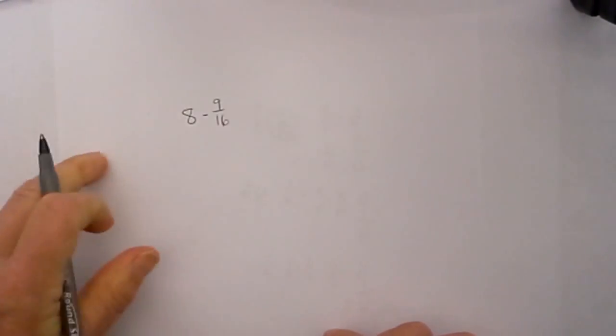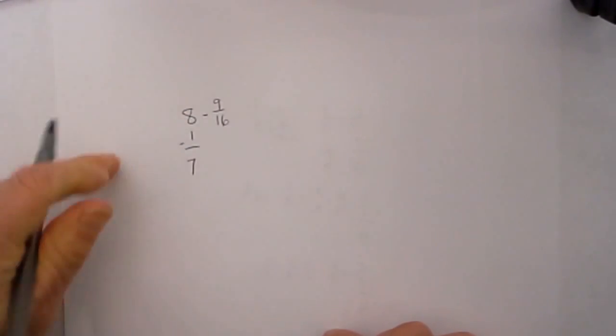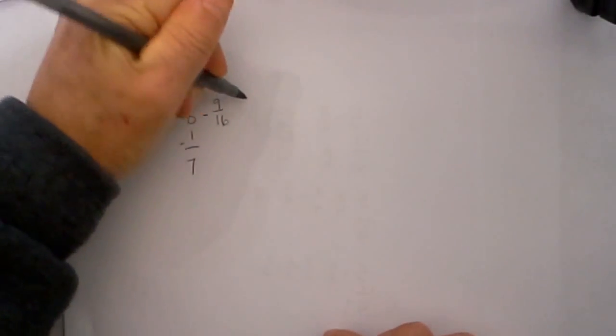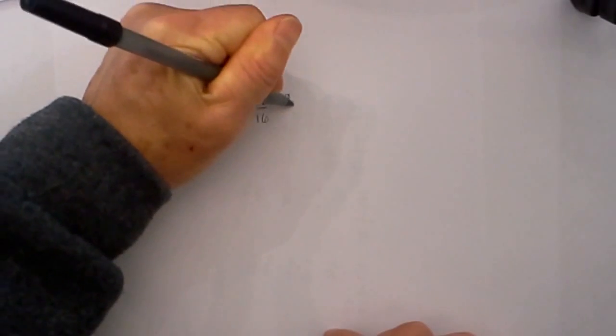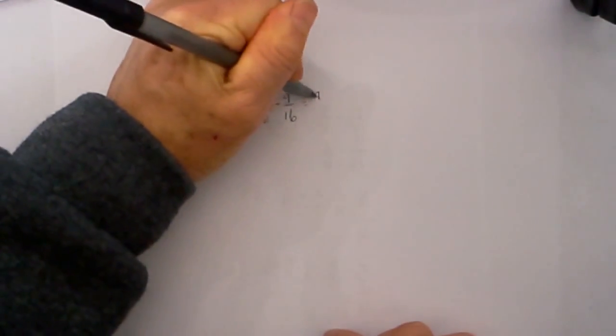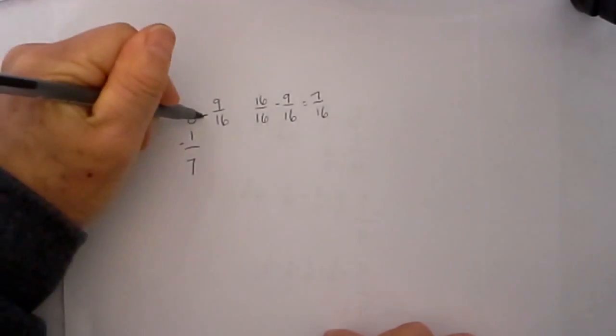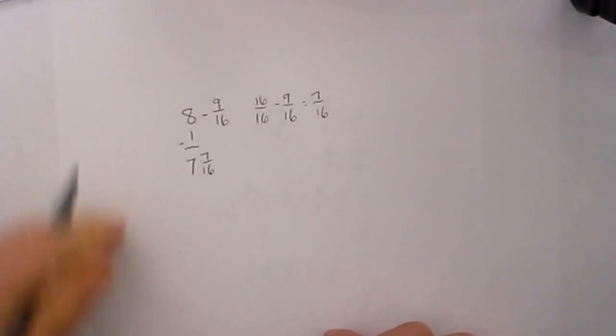Let's go with 8 minus 9/16. That looks like it is kind of tricky, but it is really not. I will subtract 1 from the 8, that becomes 7. I then get my clue from the denominator, so I will rewrite it as 16 over 16 minus 9/16. 16 minus 9 equals 7/16, so I now have 8 minus 9/16 equals 7 and 7/16.